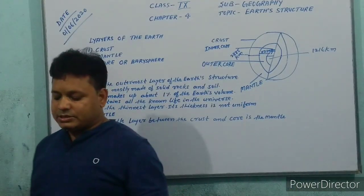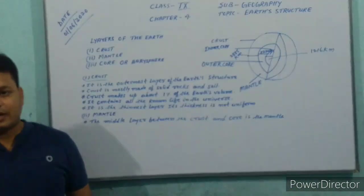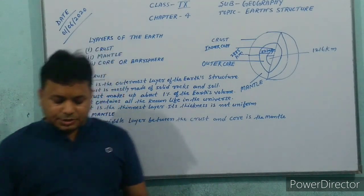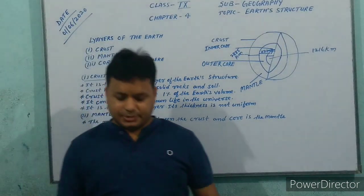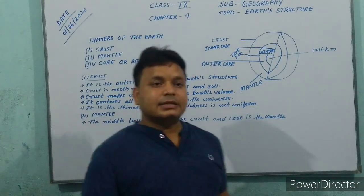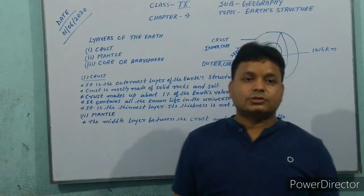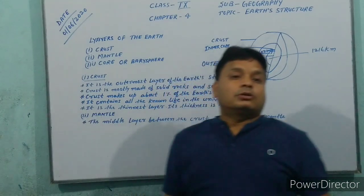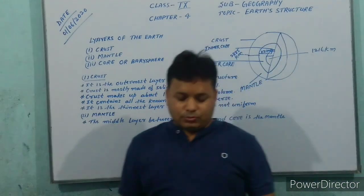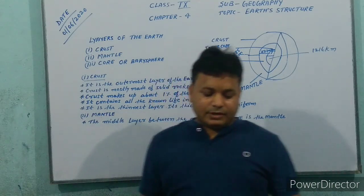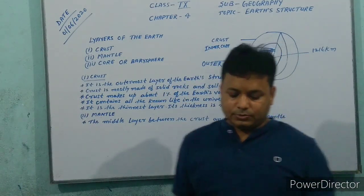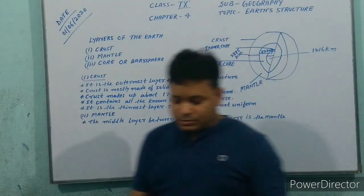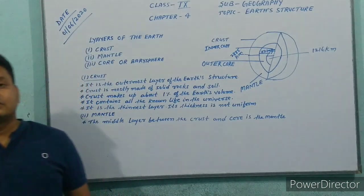The thicker layer of silica with an average density of 3 grams per centimeter cube is known as SIMA. SIMA layer mostly makes up the ocean floor. The average density of SIAL is about 2.7 grams per centimeter cube, and the average density of SIMA is about 3 grams per centimeter cube. SIAL is comparatively lighter than SIMA, and SIAL floats over SIMA.